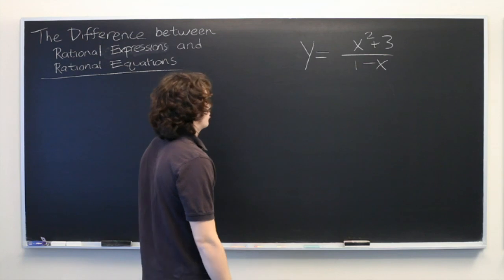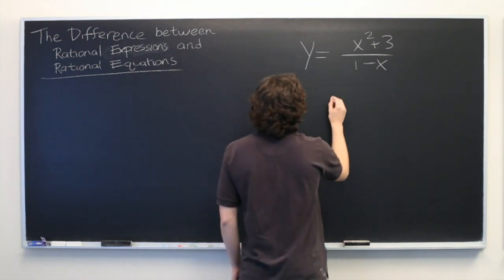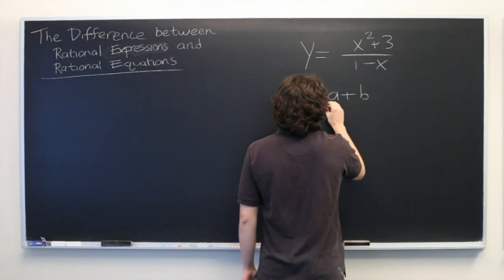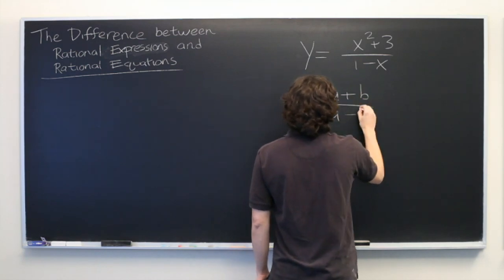An example of a rational expression might be a plus b over a minus b.